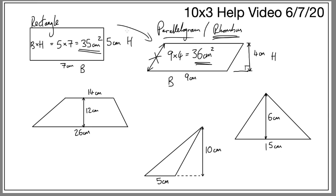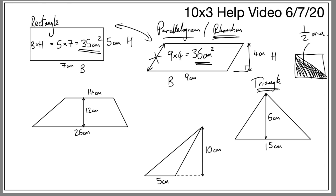Going around clockwise, we have two triangles. A triangle, as hopefully we know, is half the area of a rectangle or square — the triangle takes up exactly half the area. So for this triangle we do the base, which is 15, times the height, which is 6, and then we halve it. So we do 15 times 6 which is 90, then divide by 2, which is 45 centimeters squared.